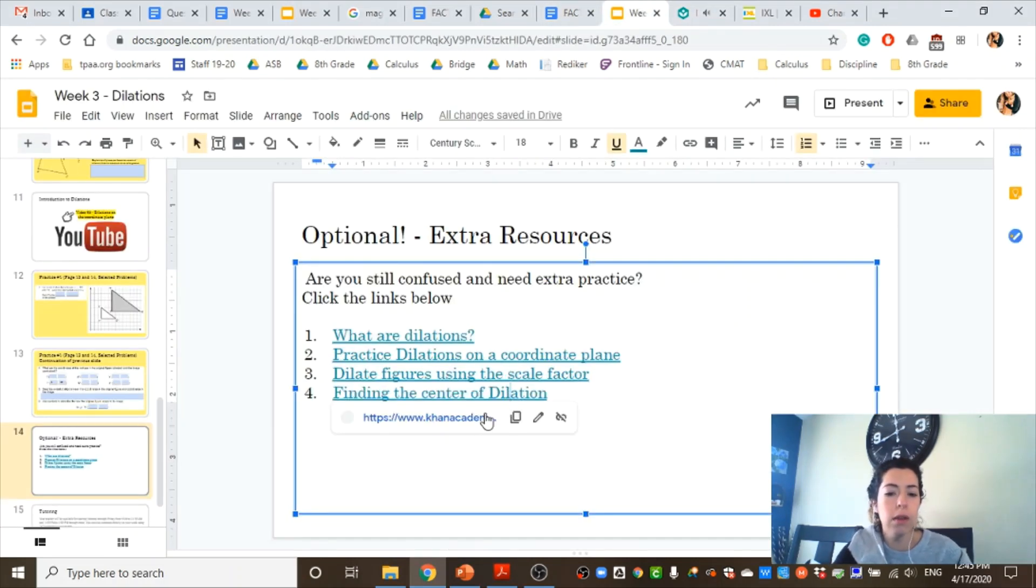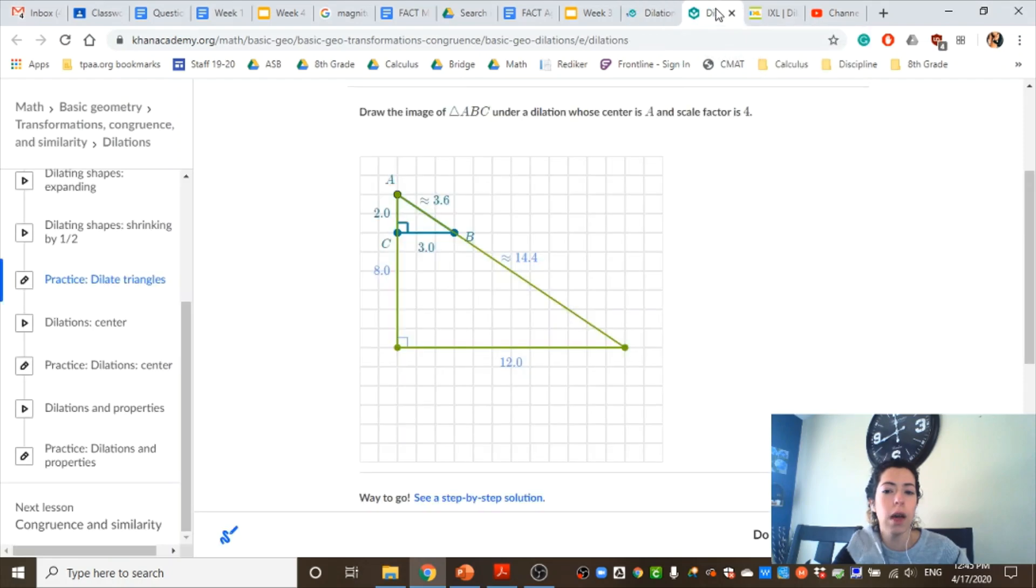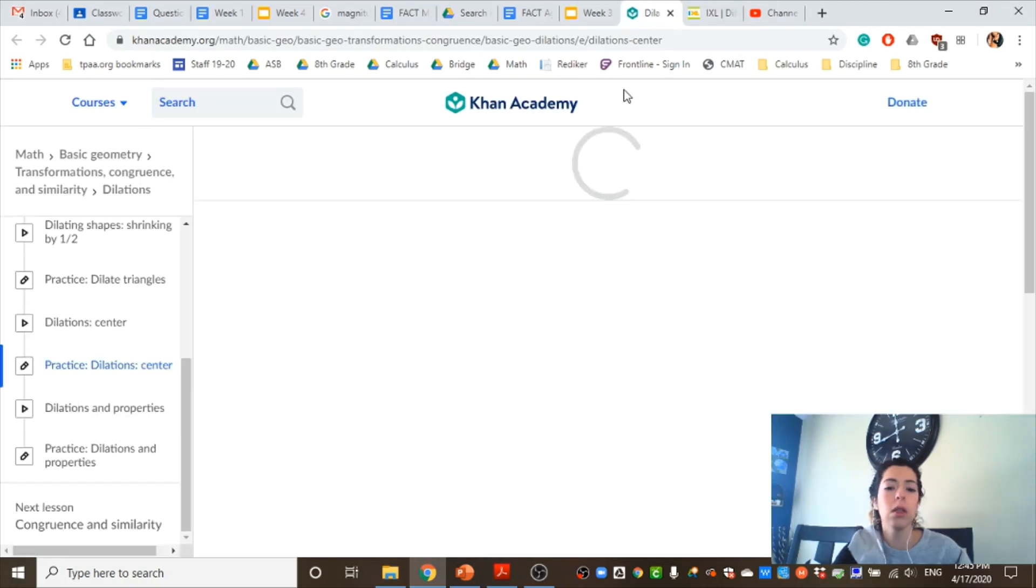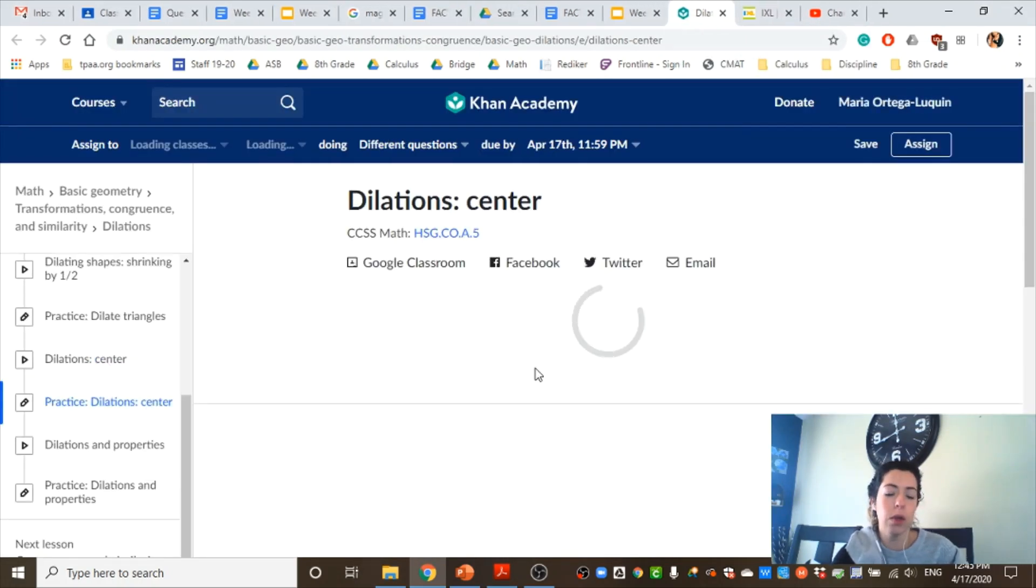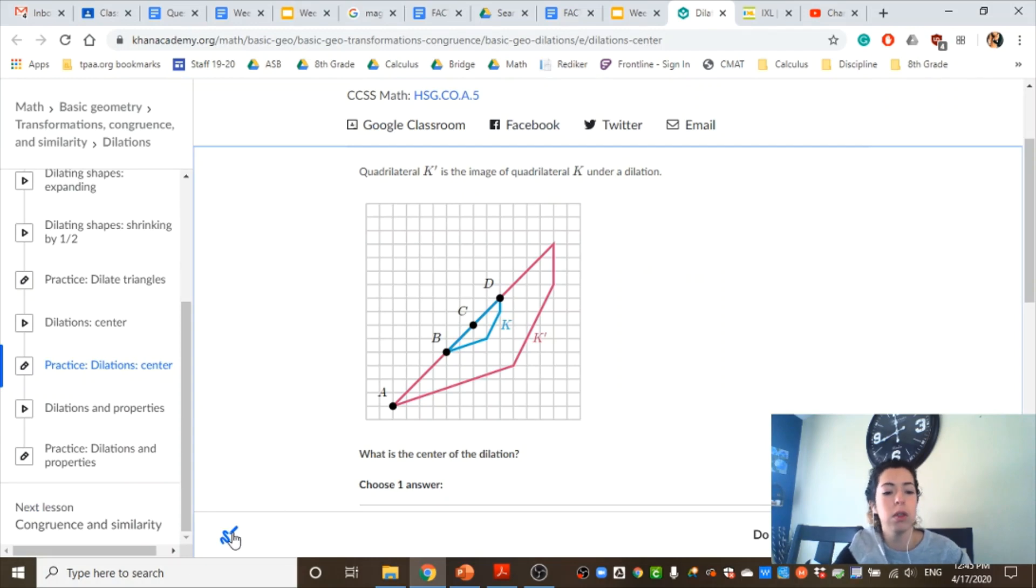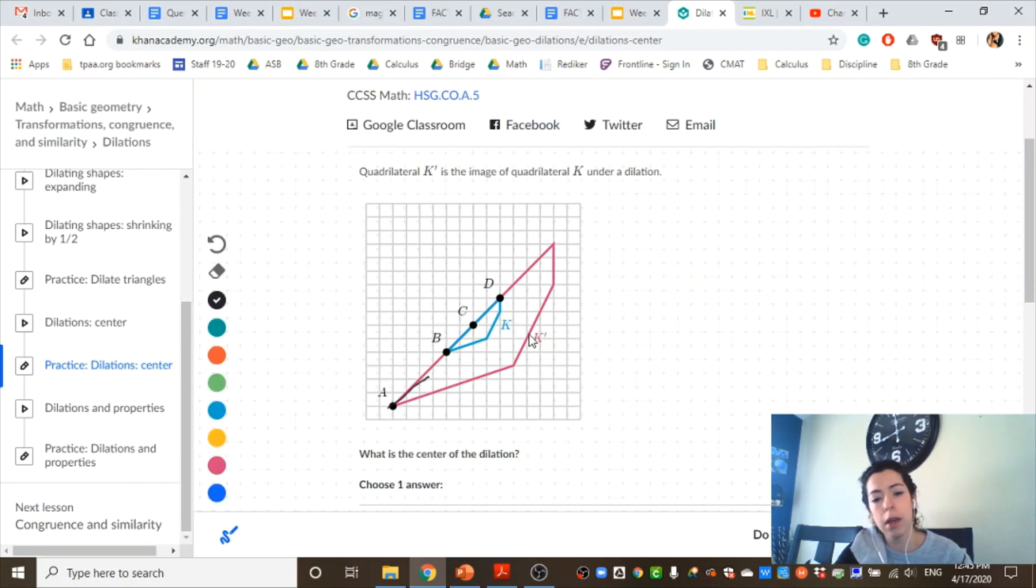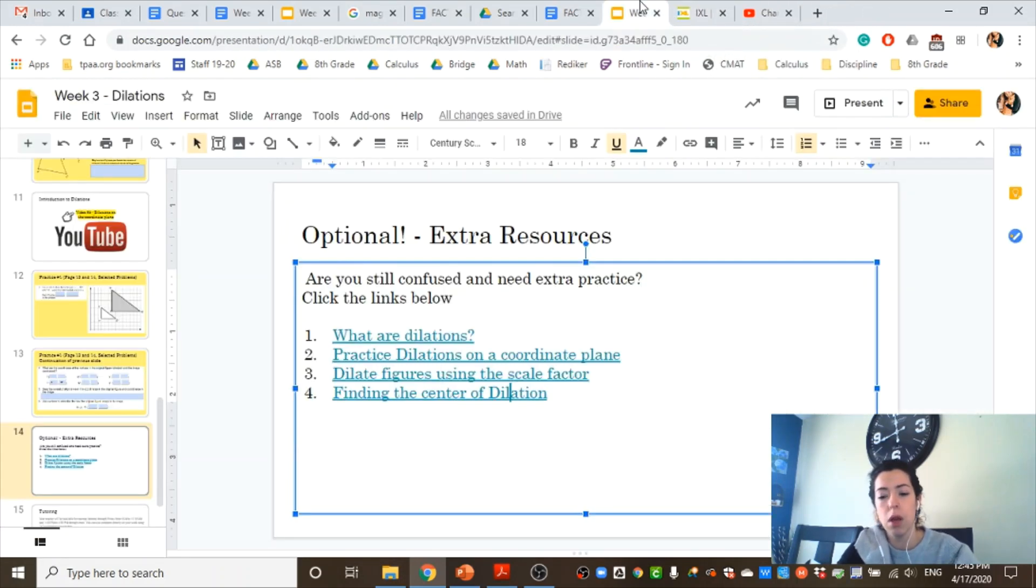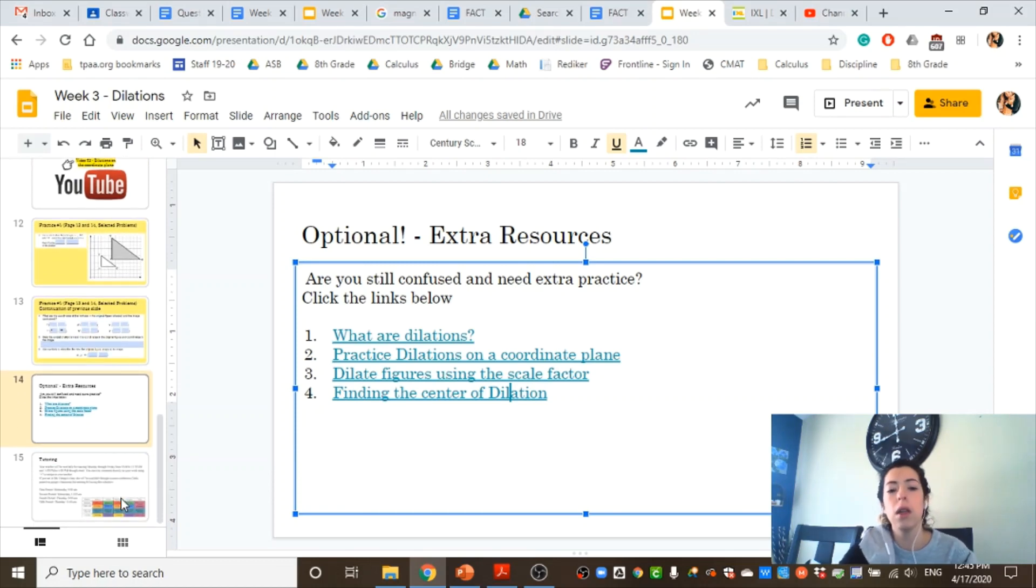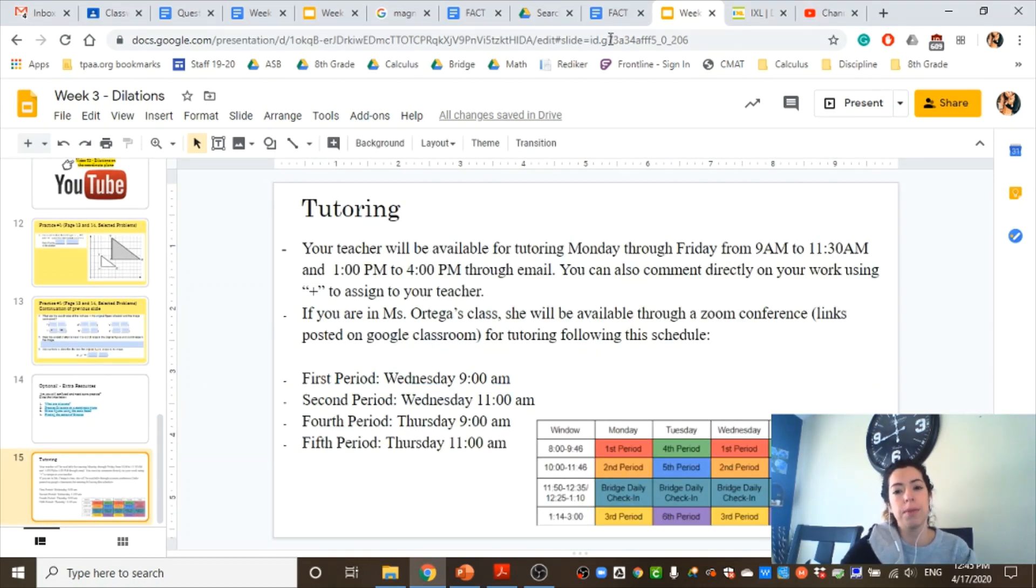And also, if you feel like, oh, I don't understand how to find the center of dilation, there's another Khan Academy practice where you have to find the center of dilation. You have the tools here and you're going to make lines. So if this corresponds with this and this one with this, so this point here will be my center of dilation. These are optional. You don't have to do them. But if you feel like you need extra practice, go ahead, and information about your tutoring hours. That's it.